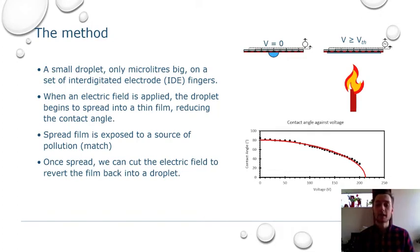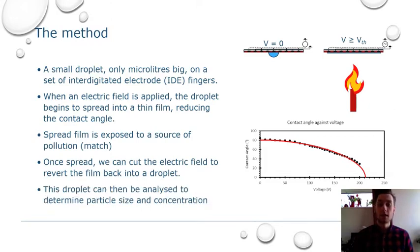Once we had these thin films, I lit a match and blew it out, so I could get that smoke rising up. The reason it's held upside down is because the smoke rises, so we would have a higher probability of the two coming into contact with one another. Once this had happened, we could cut the electric field, and this is what I find really interesting about dielectrophoresis: when the electric field is cut off, it reverts the thin film back into a droplet almost completely how it was beforehand. Then this droplet can be analyzed to determine particle size and concentration amongst other things.